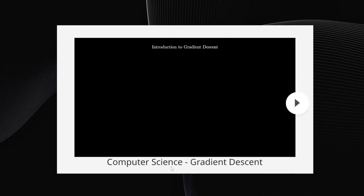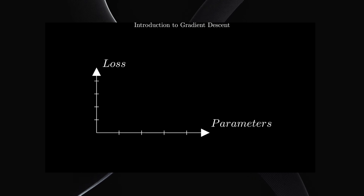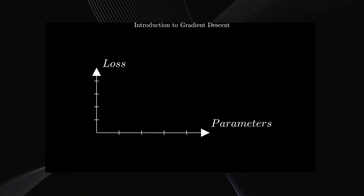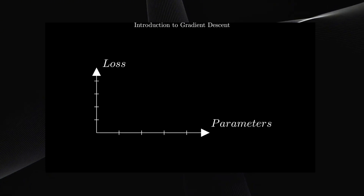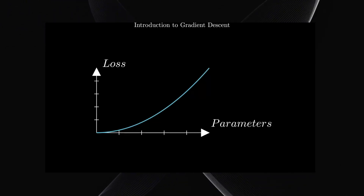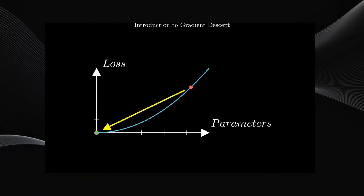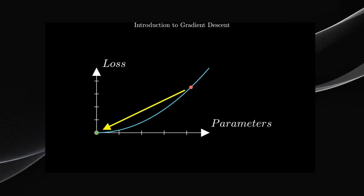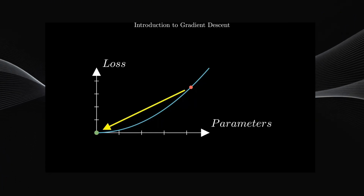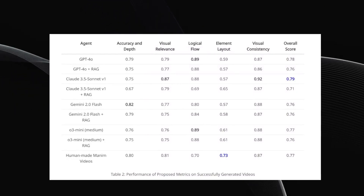And here's a computer science example teaching you about gradient descent, a super important term in AI and machine learning. To understand gradient descent, imagine a graph: the x-axis represents parameters, and the y-axis shows the loss associated with those parameters. We add a loss function — a curve that tells us how good or bad our parameter choices are. Our goal is to reach the lowest point on this curve, where the loss is minimized. The algorithm takes small steps, following the slope of the curve, gradually moving downward. This tool is so helpful for learning complex concepts, especially if you're an auditory or visual learner. This is an absolute game changer.